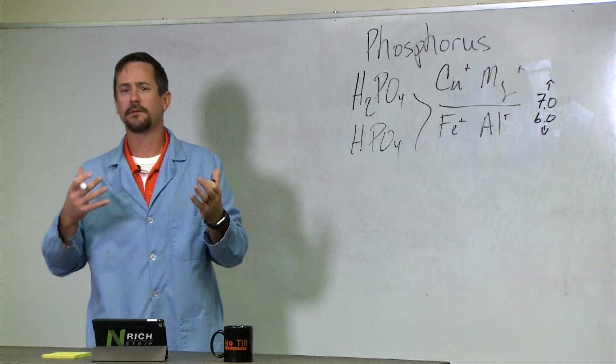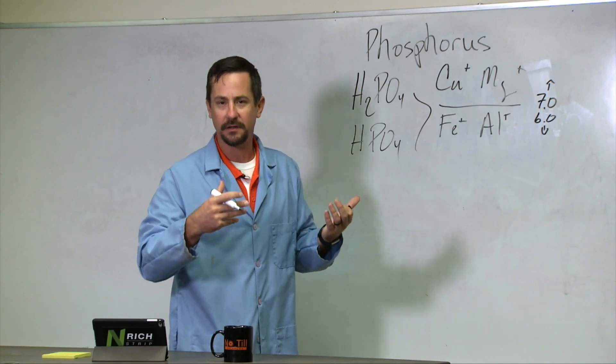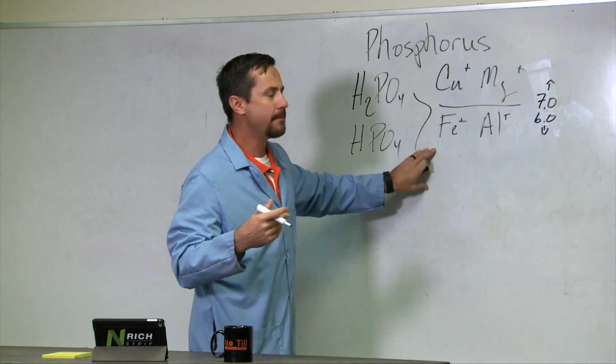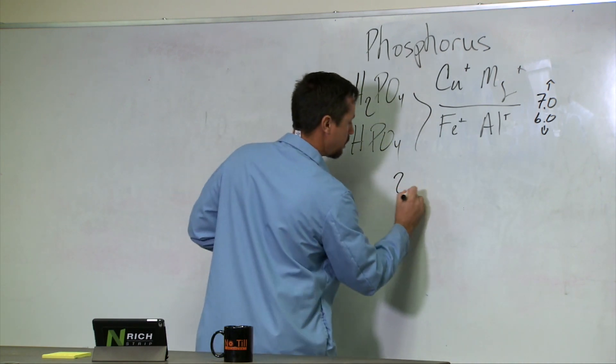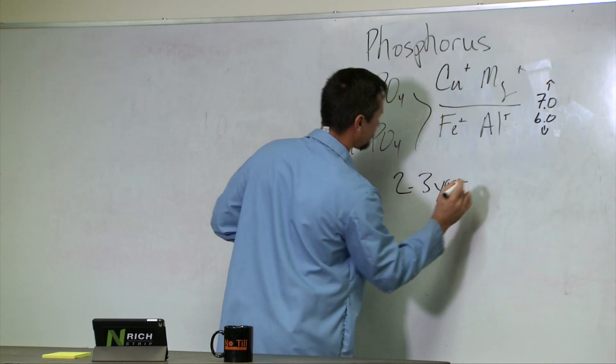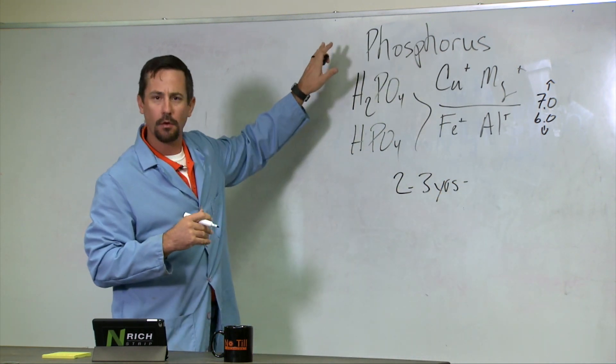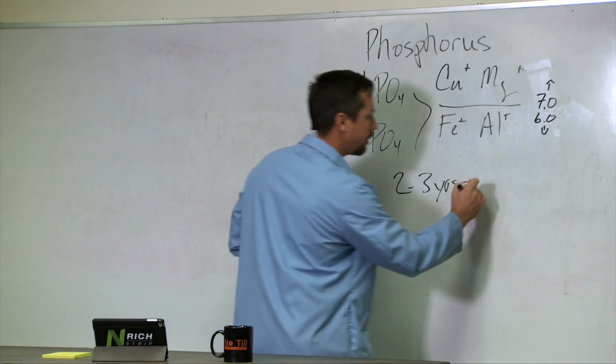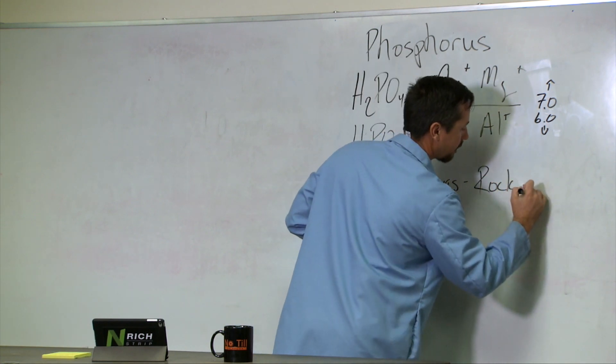This process is relatively slow—it happens over a cropping cycle or two. But in about two to three years, what we apply to the soil as fertilizer will turn into rock phosphate.